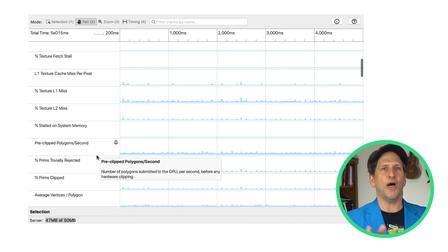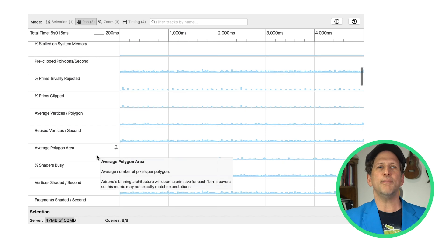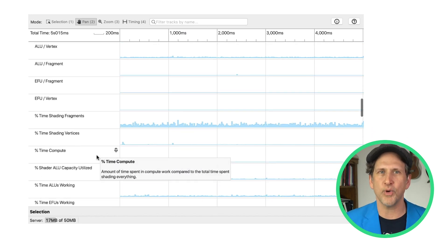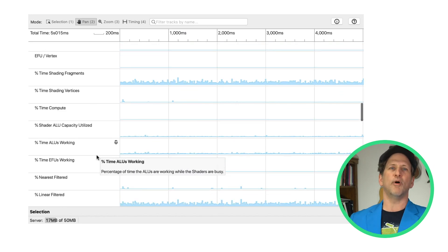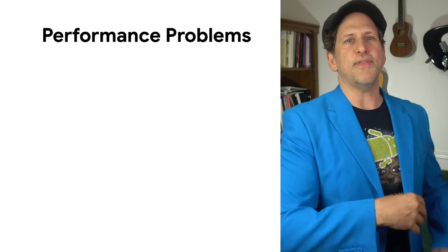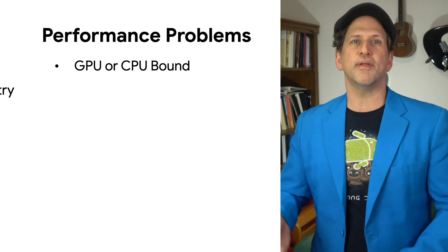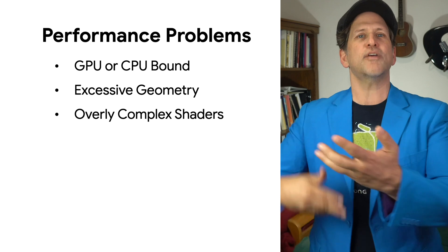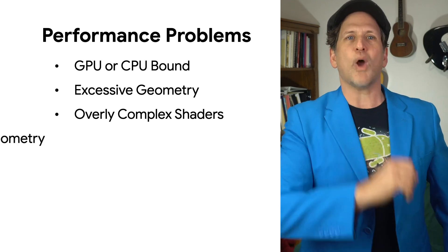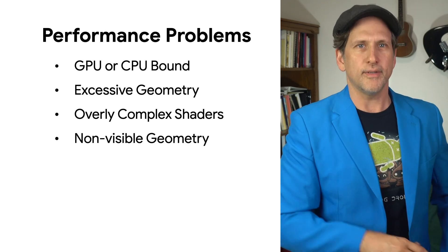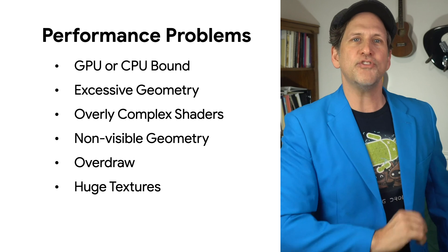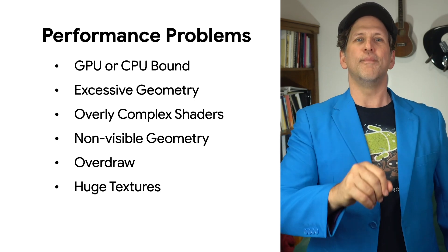Learning how to read these counters will help you diagnose many potential performance problems, some of them unique to the tile-based renderers common in mobile devices. You can tell if the app is GPU or CPU bound, if you have too much geometry, vertex or fragment shaders that are too heavy, triangles that should be culled, excessive overdraw, potentially oversize textures and more.